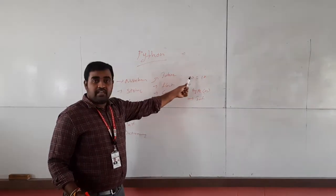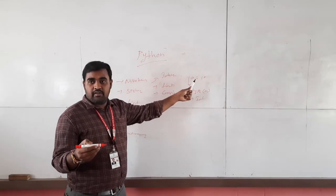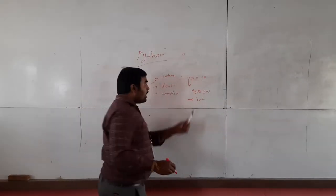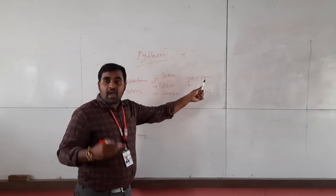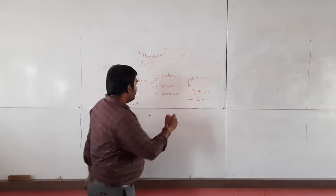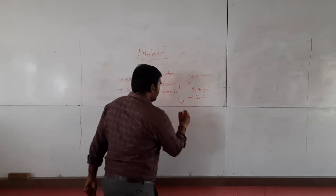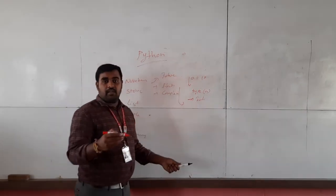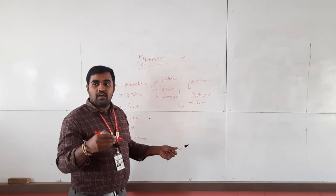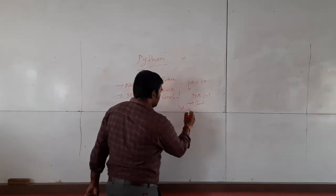No need of declaring the variable — it automatically takes the value. Next one is floating. What is the floating example? After the decimal point, it will take up to 15 decimal places.